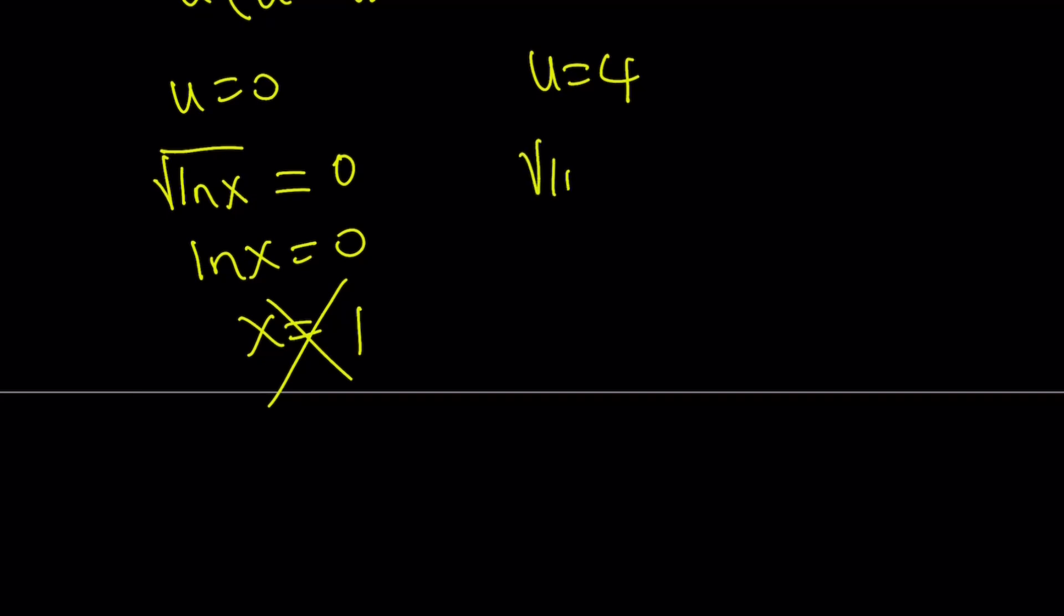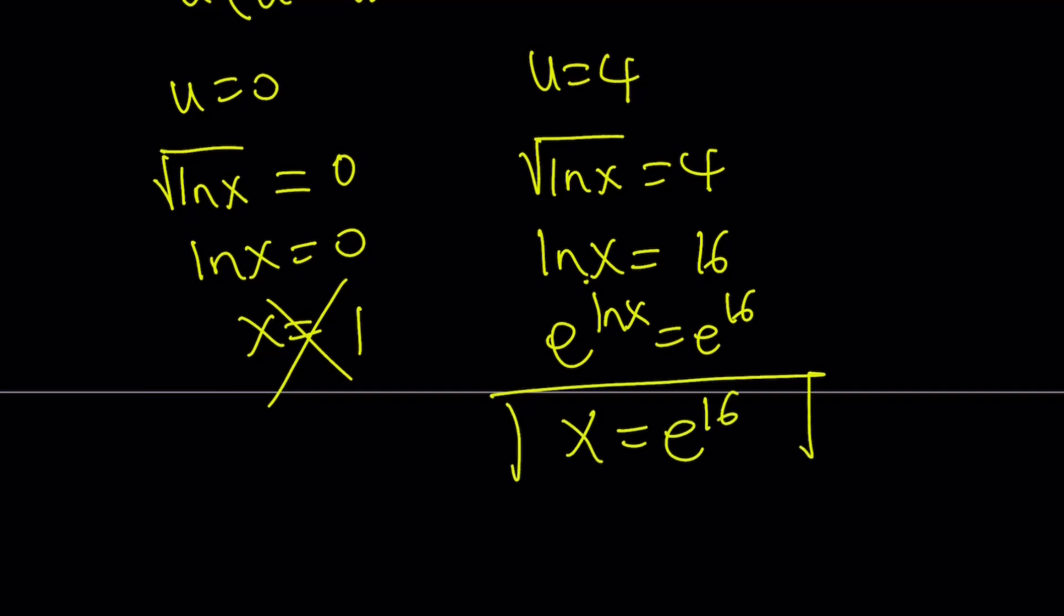Okay. If u is equal to 4, square root of ln x equals 4. And then square both sides, ln x is equal to 16. And by using the definition or by doing e to the power of both sides, we get e to the power ln x equals e to the power of 16, which means x equals e to the power of 16, as the only solution to this equation.